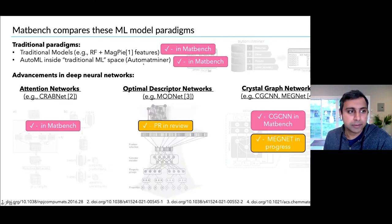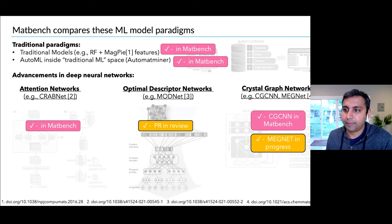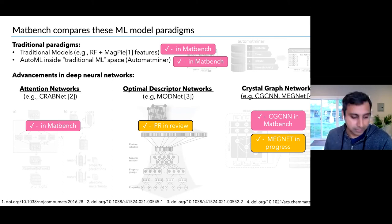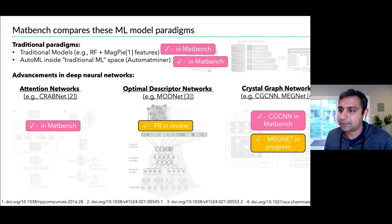In addition to these more traditional paradigms, there's been a lot of work on neural networks showing very good performance. There is CrabNet, which works just based on composition and figures out good interactions between elements. There's ModNet from John Norskov's group, which is similar in spirit to AutoMatMiner but uses neural networks for feature selection and prediction. And there are crystal graph neural networks — CGCNN — as well as modifications like MEGNet. Random Forest and AutoMatMiner are already in MatBench; CrabNet was recently added; ModNet has a pull request in review; and CGCNN is already in MatBench.